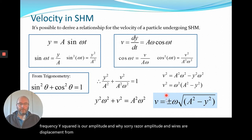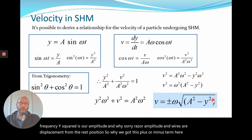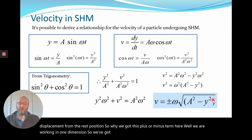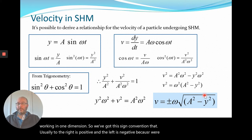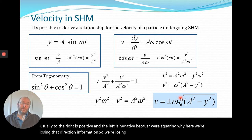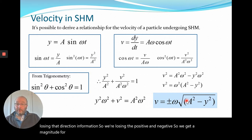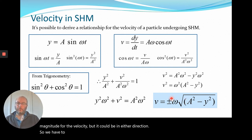Why do we have this plus or minus term? We are working in one dimension, so we have a sign convention — usually to the right is positive and to the left is negative. Because we're squaring y, we're losing that direction information. So we get a magnitude for the velocity but it could be in either direction, and we have to remember that when working with the velocity equation.